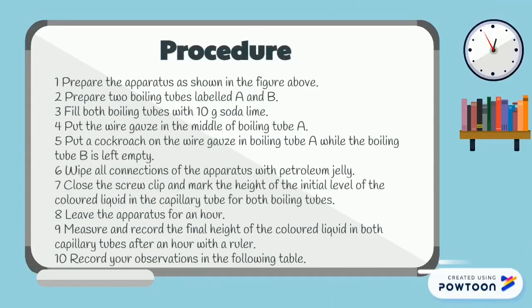The procedure is as follows: First, prepare the apparatus as shown in the figure. Second, prepare 2 boiling tubes labeled A and B. Third, fill both boiling tubes with 10g of soda lime. Fourth, put the wire gauze in the middle of boiling tube A. Fifth, put a cockroach on the wire gauze in boiling tube A, while boiling tube B is left empty. Sixth, wipe all connections of the apparatus with petroleum jelly.